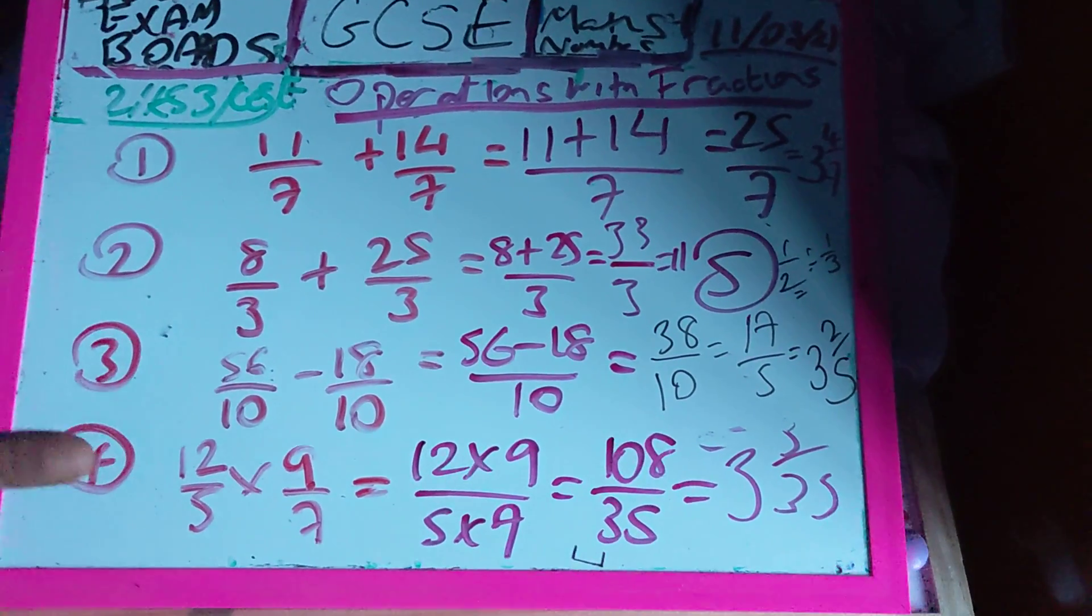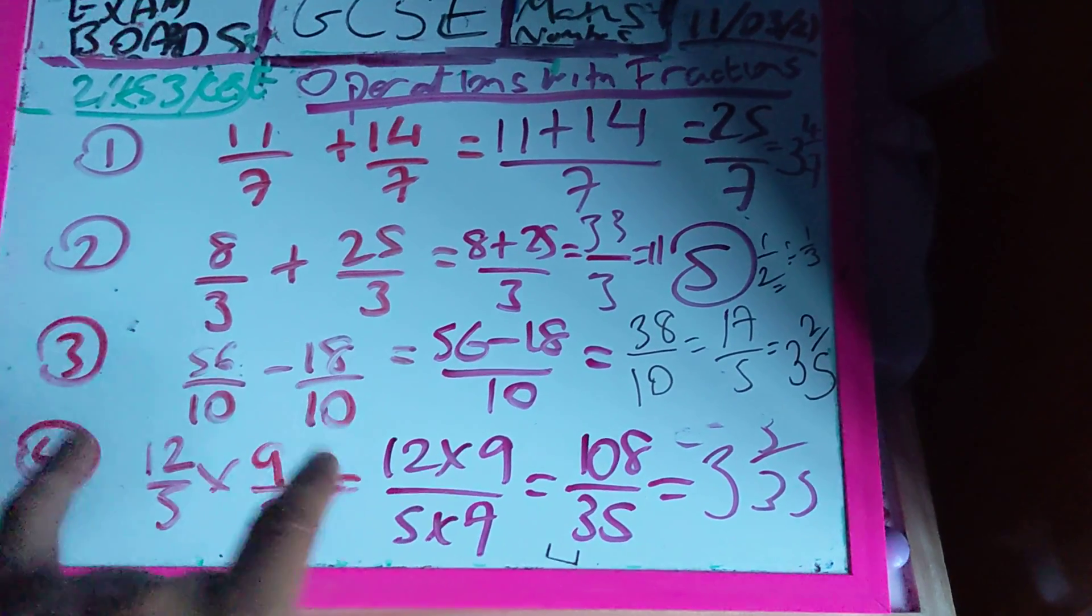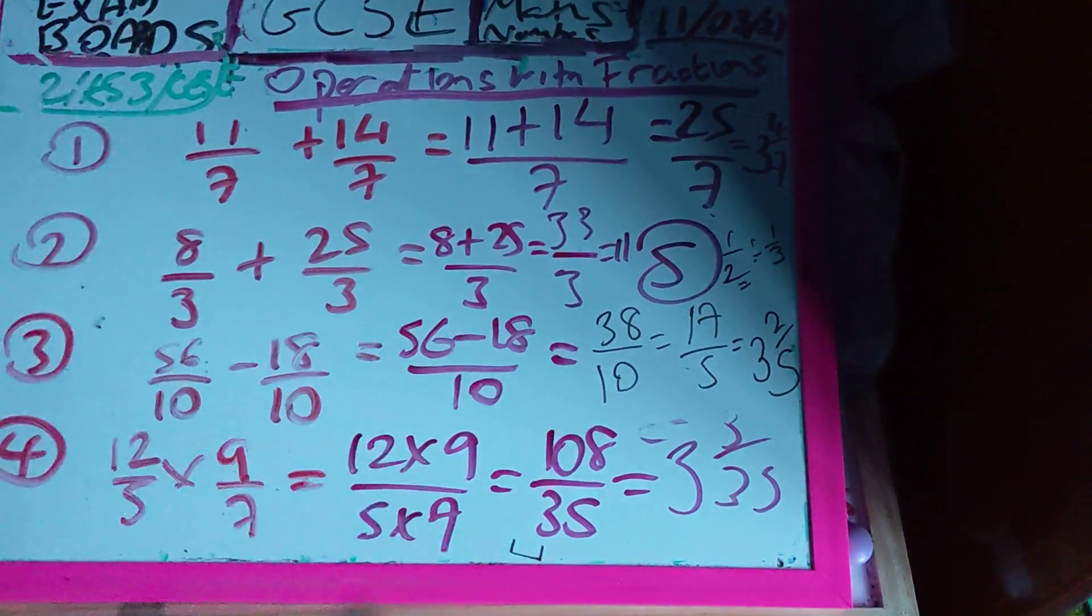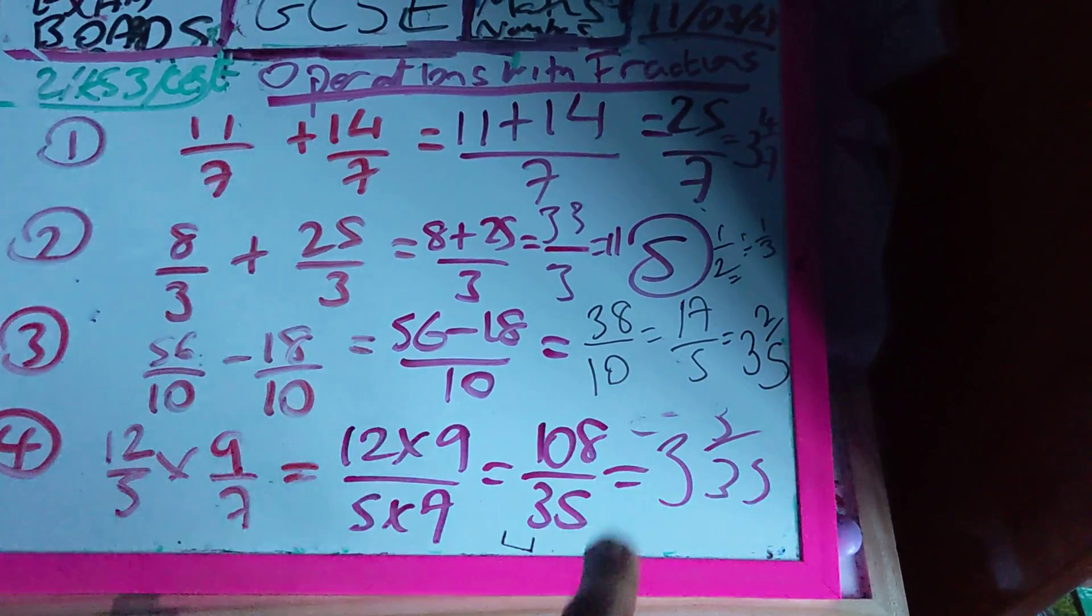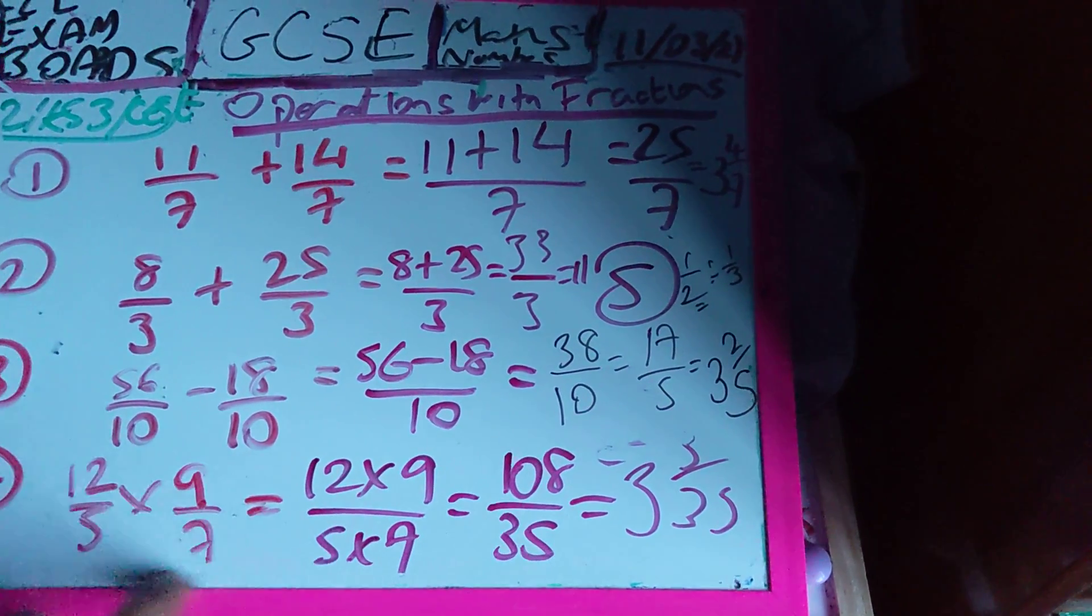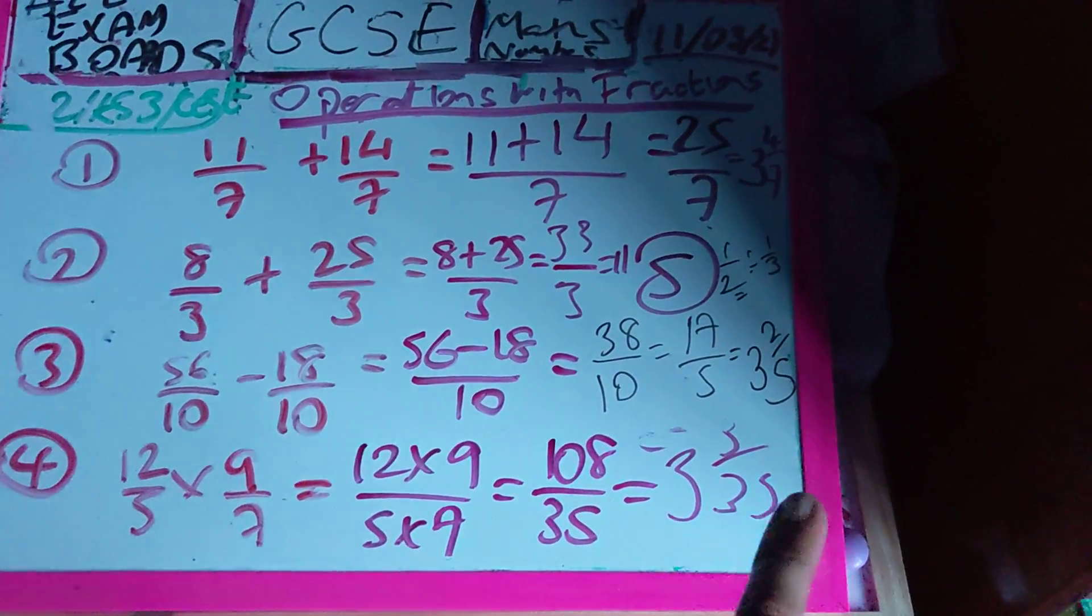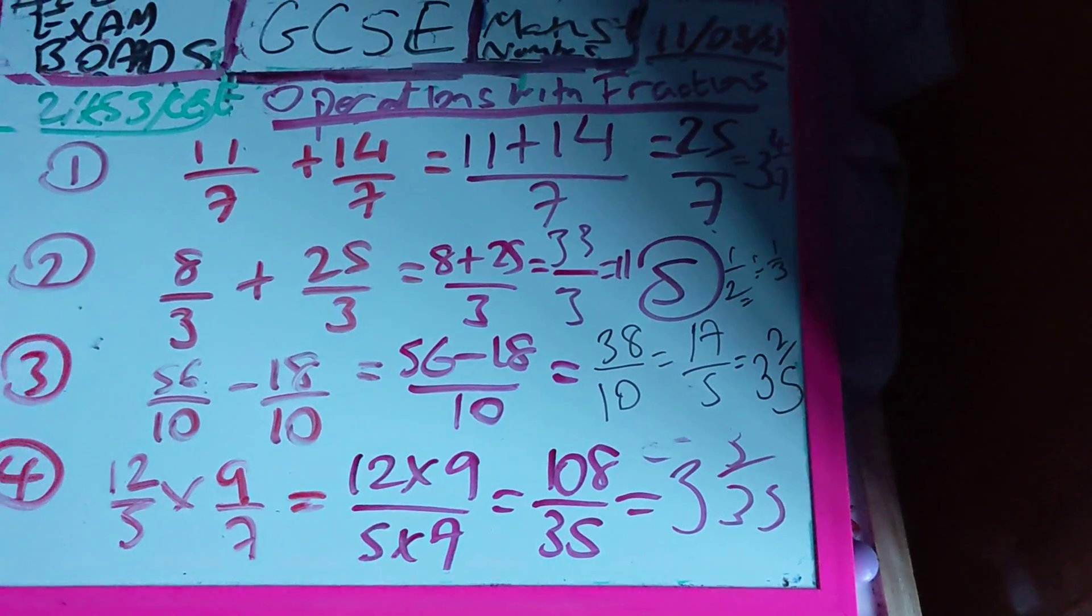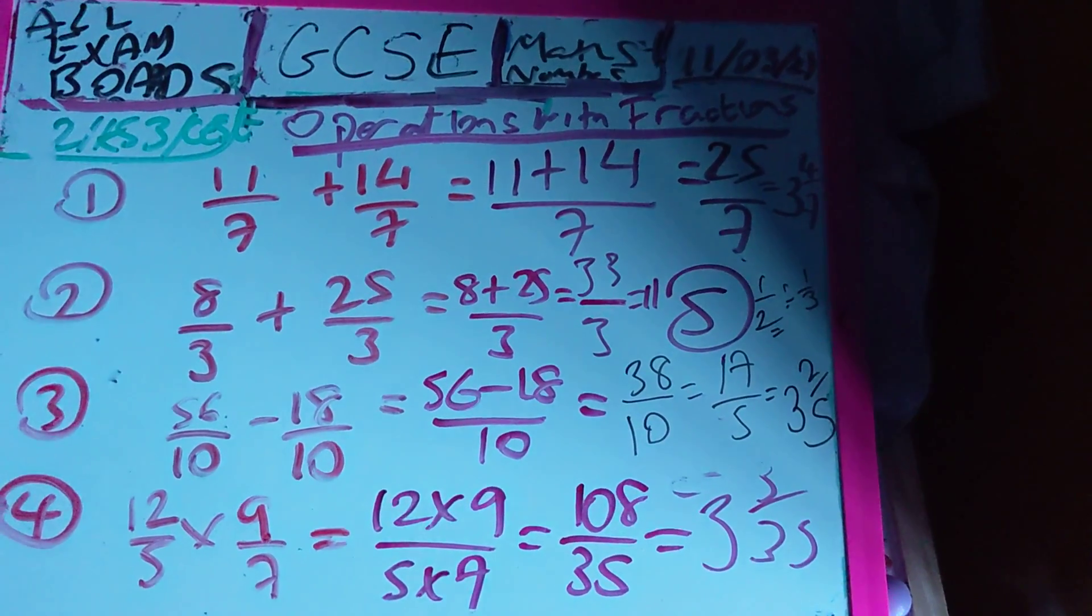Right guys, question number 4, times in fractions. When I times fractions, what I do is times the top numbers and the bottom numbers. 12 times 9 is 108, 5 times 7 is 35. That is an improper fraction, which can be written as a mixed number. Sorry about my stapler there. Which is going to be 3 whole 1s and 3 fifths. 3 times 35 is 105, add 3 is 108. So that is the rule, guys.